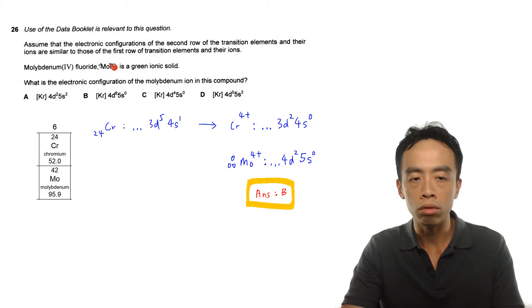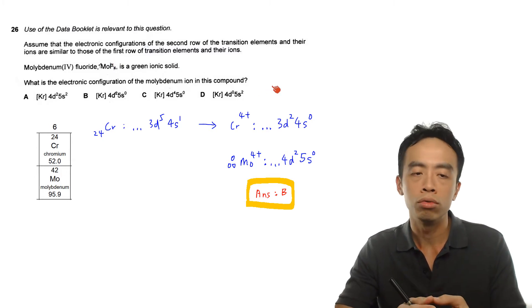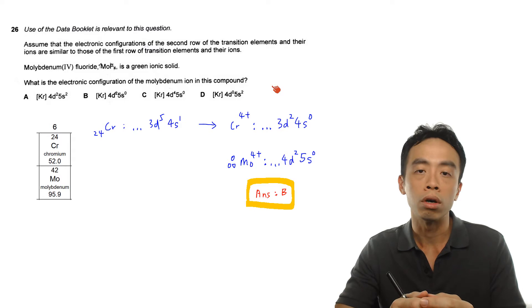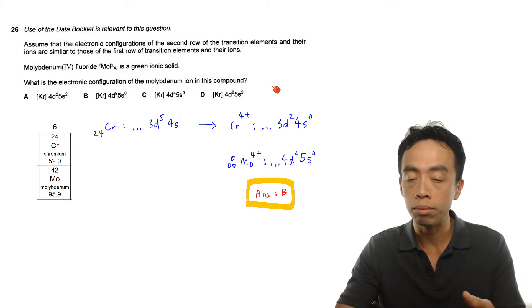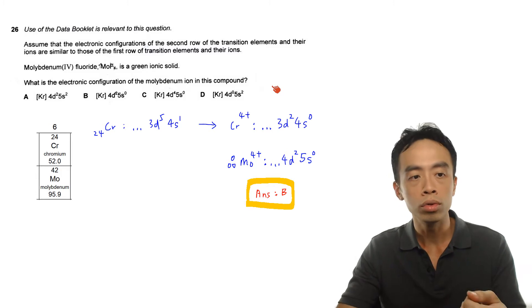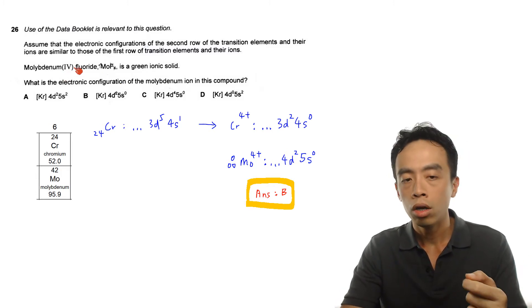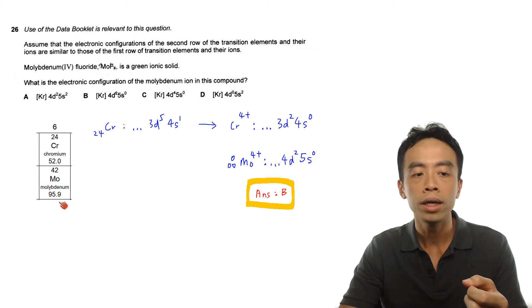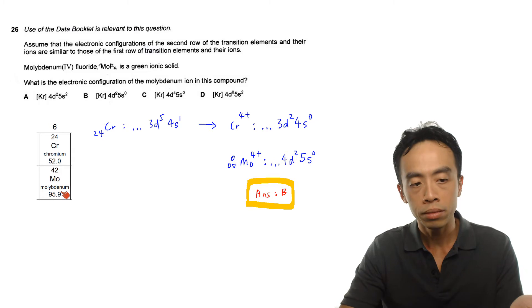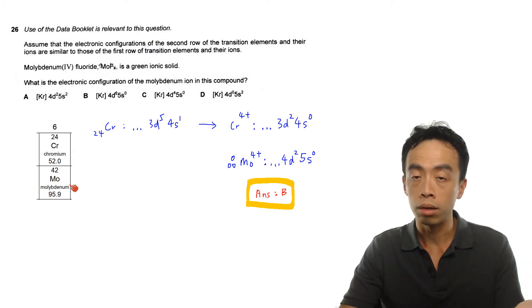The question already mentioned what we will need to do: we need to make use of what we have learned in the first row of transition elements, then apply this to molybdenum. What we will need to do first is try to find out where this molybdenum is.